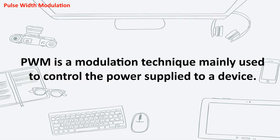Pulse Width Modulation, or PWM, is a modulation technique mainly used to control the power supply to a device, or to send pulse signals for control of the devices.